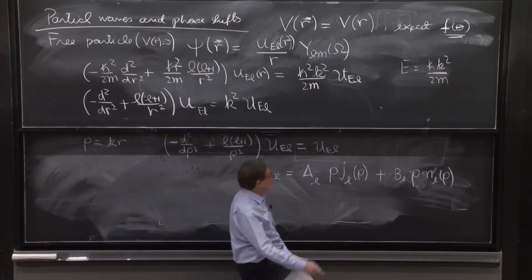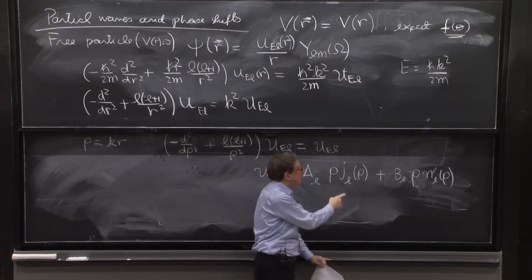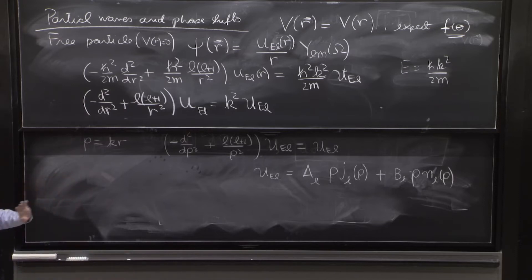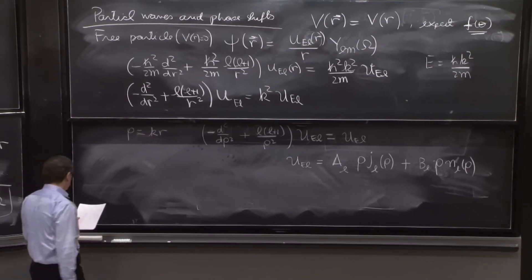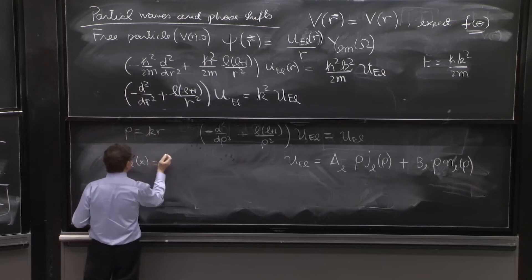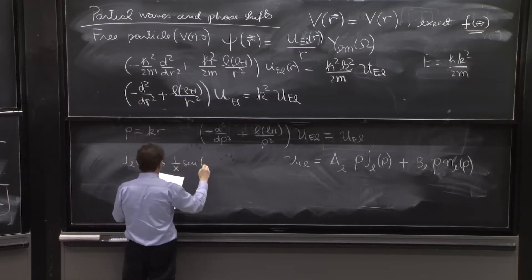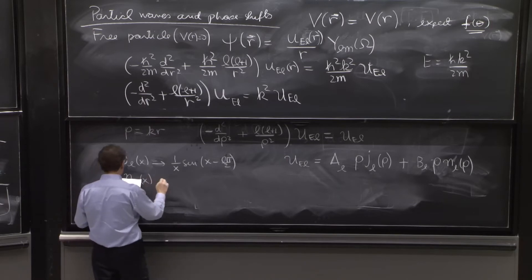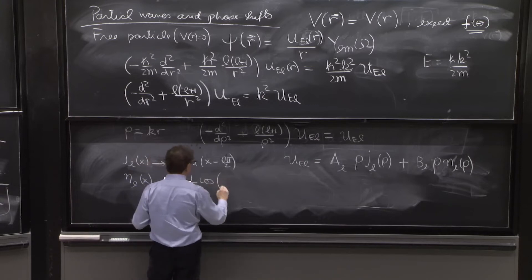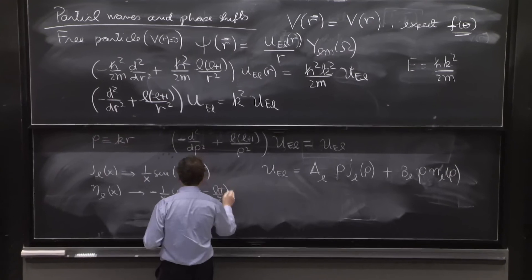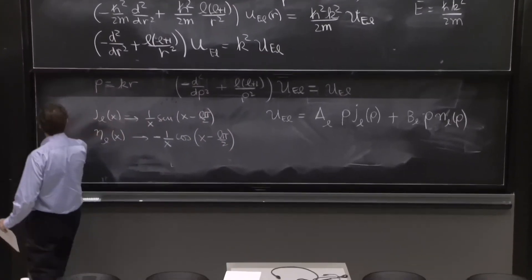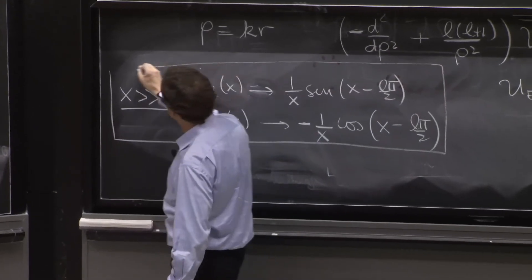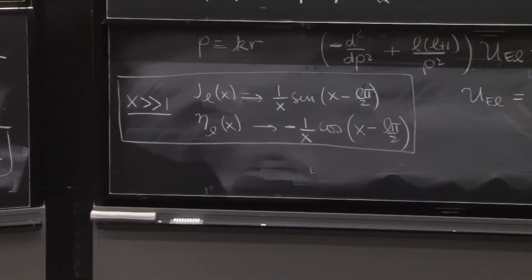So those are spherical Bessel functions. As you're familiar from the notation, the j is the one that is healthy at rho equals 0. It doesn't diverge. The n is the solution that diverges at the origin. And both of them behave nicely far away. So j_l of x goes like 1 over x sine of x minus l pi over 2. And eta_l of x behaves like minus 1 over x cosine of x minus l pi over 2. This is for x big, x much greater than 1. So you have this behavior.